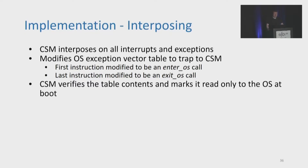To support the CSM and allow it to interpose on all interrupts and exceptions, we need a way to force the system to trap to the CSM on every exception. Hypervisors traditionally accomplish similar functionality by trapping interrupts to themselves and injecting virtual interrupts to the VM, but this requires significant additional complexity. BlackBox avoids this through a different approach: the hardware is configured so that all exceptions are routed to the OS as typical. Then the OS's exception vector table is modified such that its first and last instructions are calls to the CSM's ABI enter-OS and exit-OS calls. During boot, the CSM verifies the table's contents and makes it read-only to the OS, so every exception starts with an enter-OS call and ends with an exit-OS call, allowing the CSM to interpose on all exceptions.